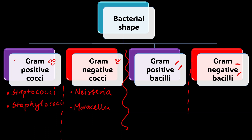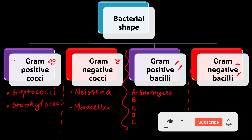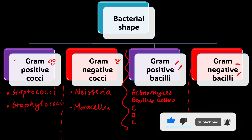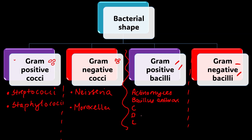Now for gram positive bacilli, we have a mnemonic: A B C D L. A stands for Actinomyces, B stands for Bacillus anthracis and Bacillus subtilis, C represents Clostridia, D reminds you of Diphtheria (Corynebacterium diphtheriae), and L stands for Listeria.